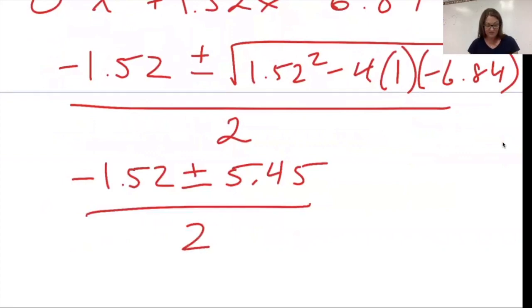I'm going to get two roots here. One's negative, one's positive. That's one of my roots. And my other root is negative 1.52 minus 5.45, whole thing divided by 2, negative 3.49.